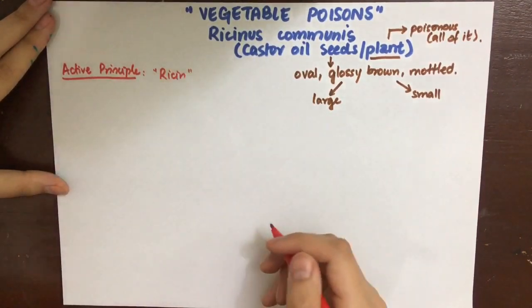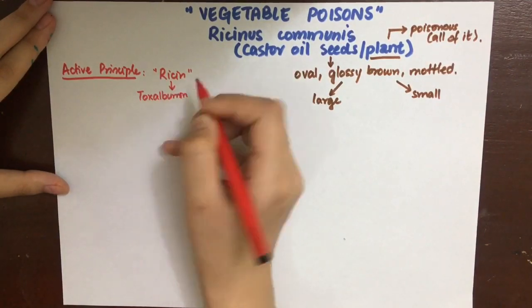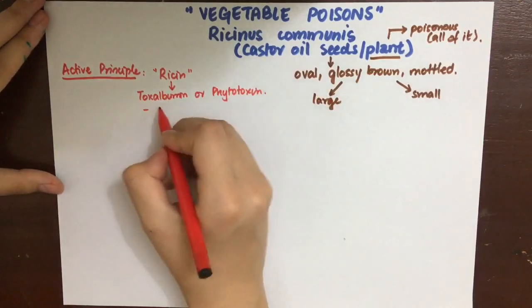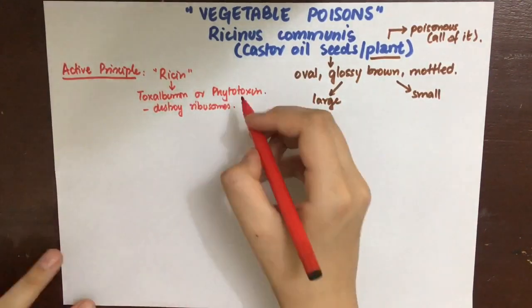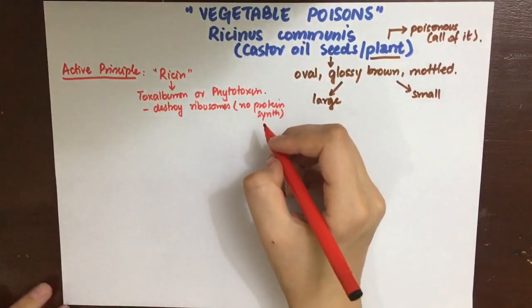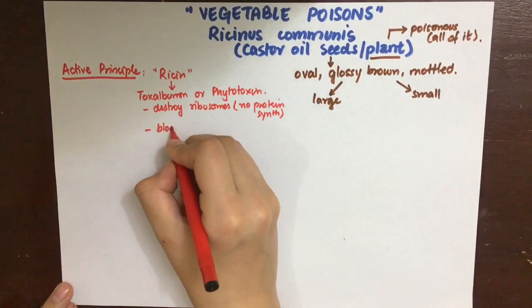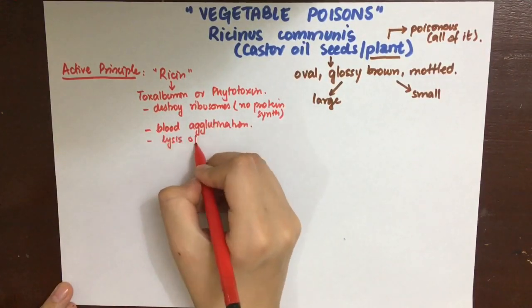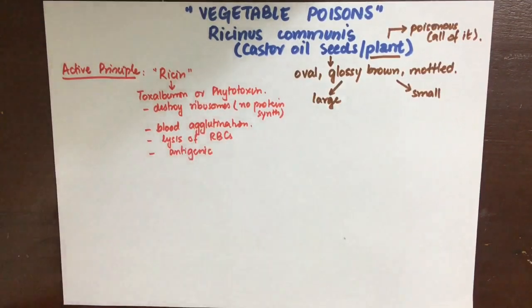The active principle of Ricinus communis is ricin, which is a super toxic poison also known as toxalbumin or phytotoxin. What it does is destroy the ribosomes, so there is no protein synthesis, leading to cell death and tissue damage. It also causes blood agglutination and lysis of blood cells, and it is also strongly antigenic.